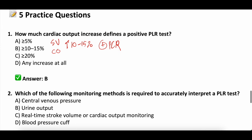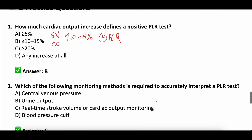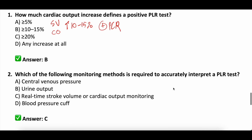Question two: which monitoring method is required to accurately interpret a passive leg raise test? A) central venous pressure, B) urine output, C) real-time stroke volume or cardiac output monitoring, or D) blood pressure cuff? The correct answer is C. You need a monitoring method that looks at stroke volume, cardiac output, or end-tidal CO2. You can't just look at blood pressure or CVP — you need dynamic measurements.